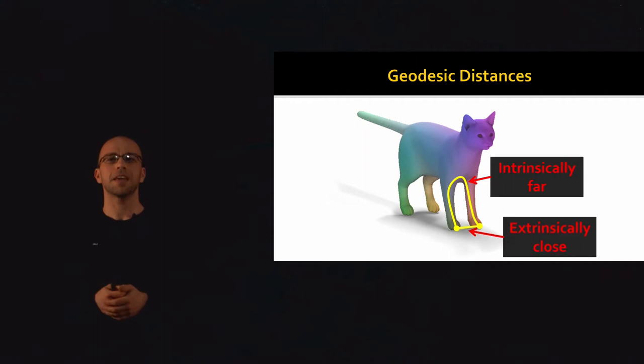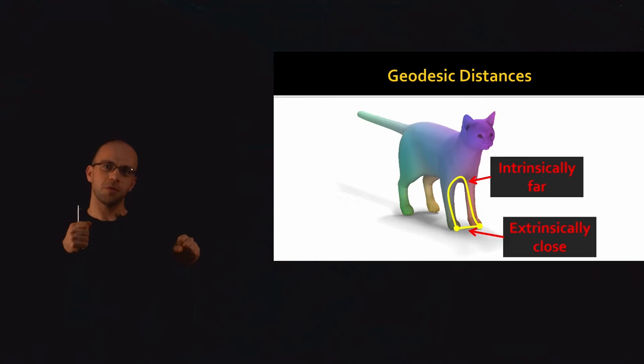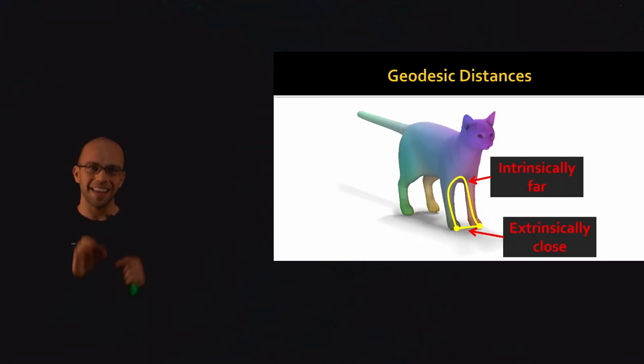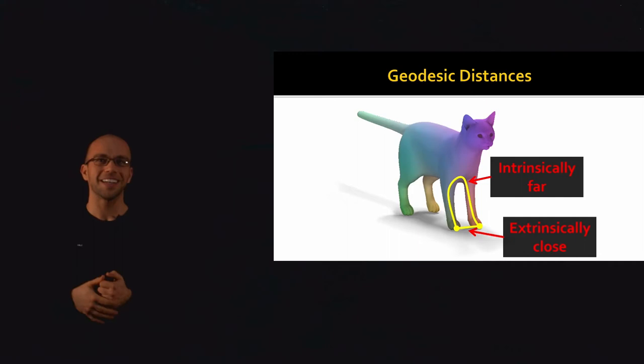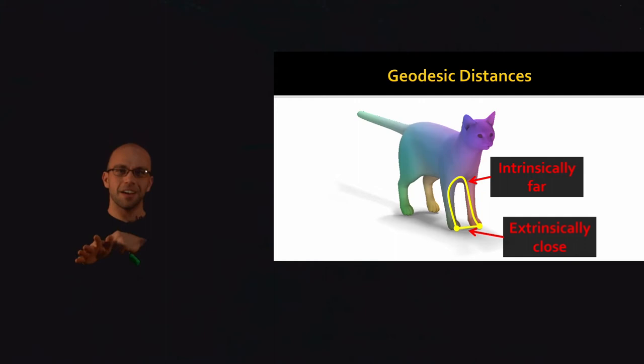Now let's add a constraint: in order to get from one point on the surface to another, the only thing allowed is to crawl along the surface itself. If I'm an ant crawling along the cat, I can't jump off one paw and land on the other — I have to walk along the cat's fur. In that case, drawing a path from one point to the other requires a lot more work: start from one paw, crawl up the leg, across the cat's chest, and down to the other paw.